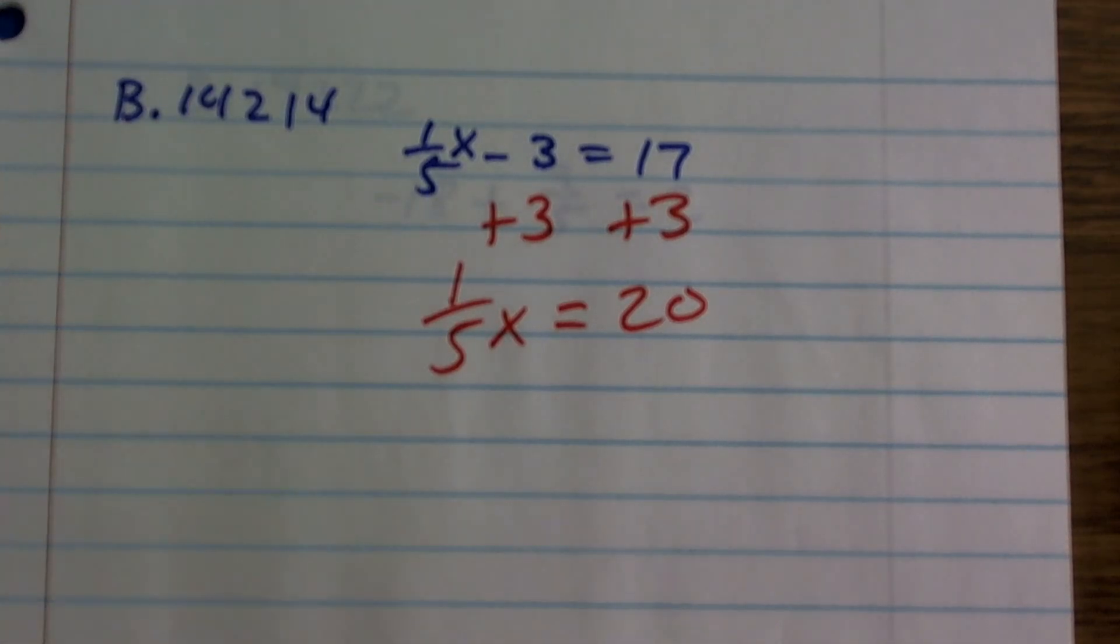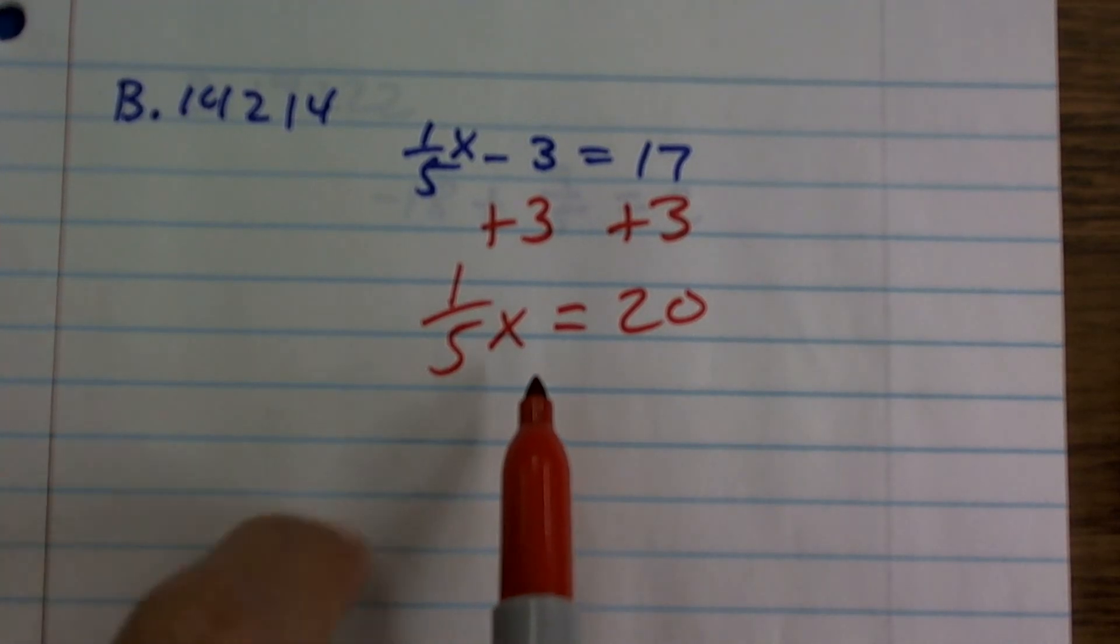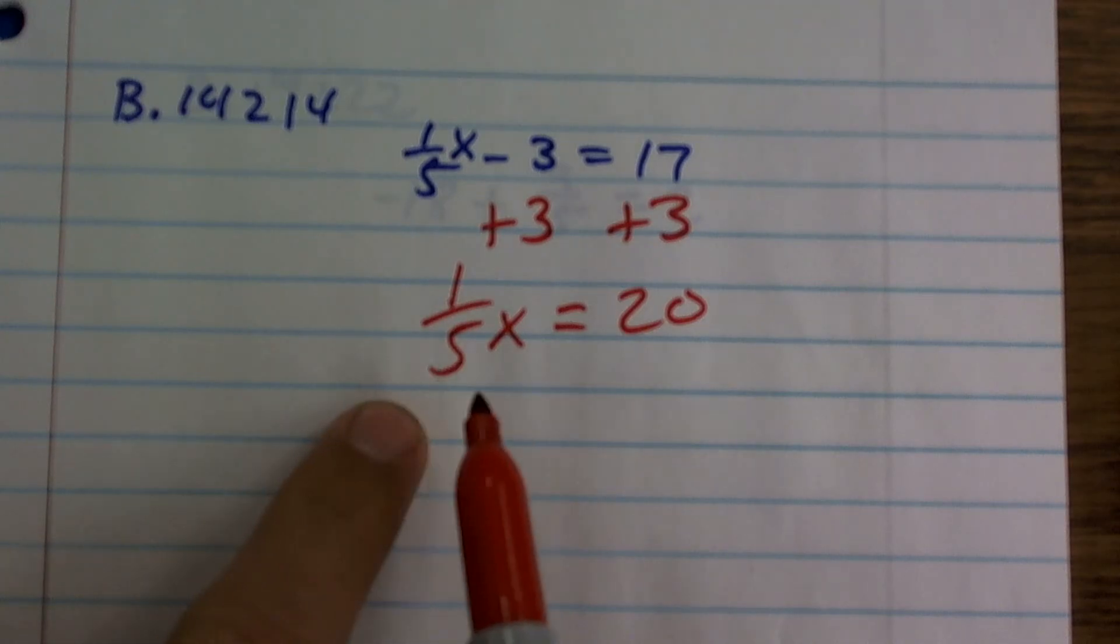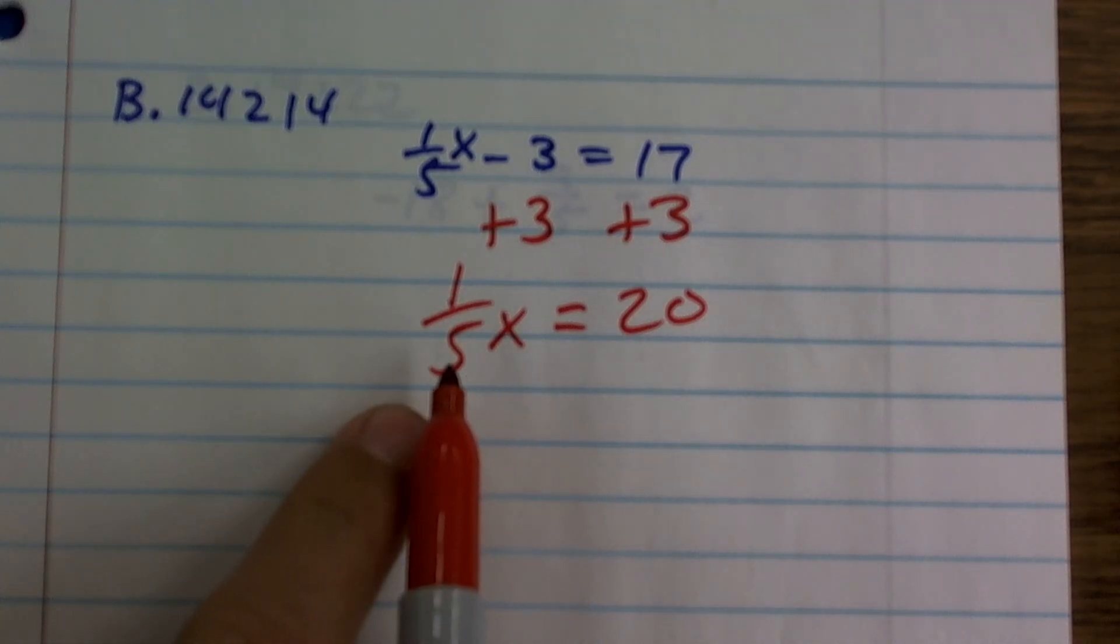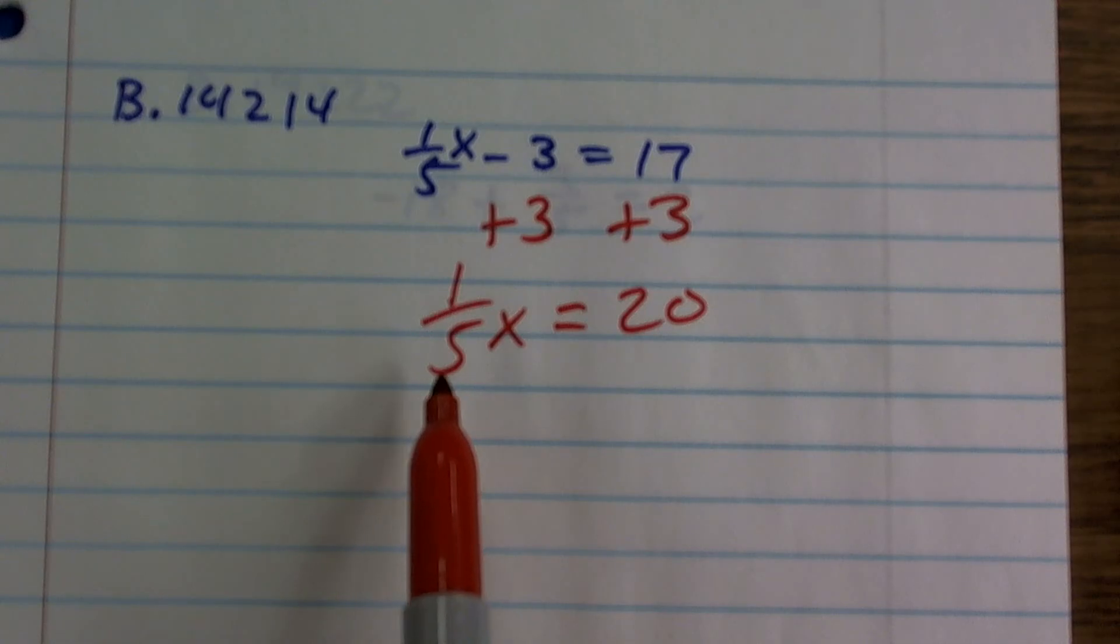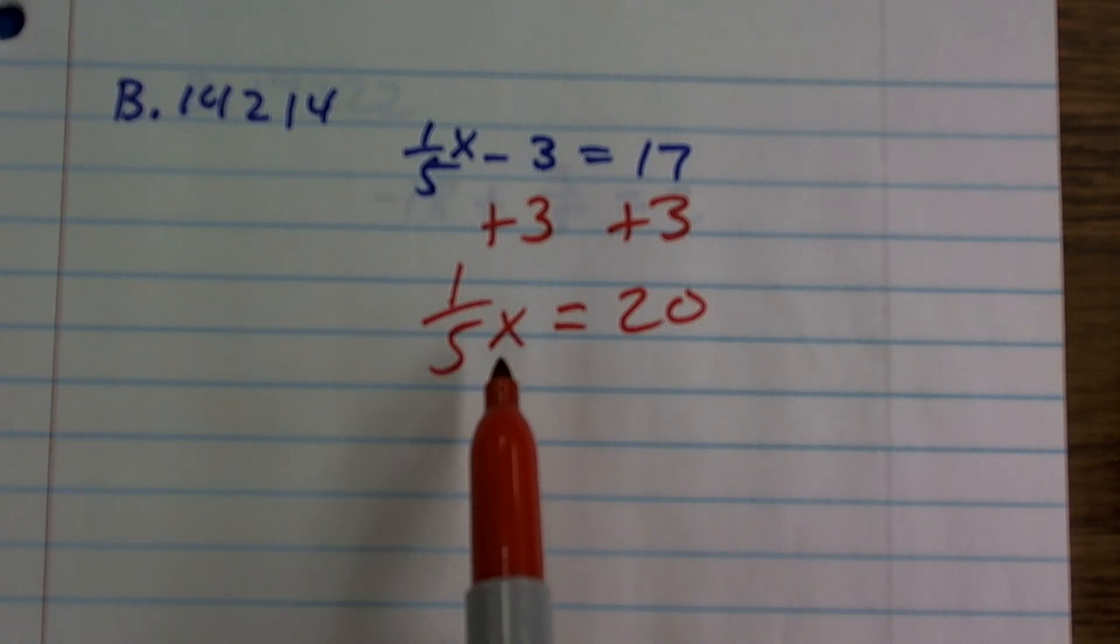The other way to explain it is the reciprocal property. Whenever you have a number being multiplied by a fraction, we want to get this number - instead of one-fifth, we need to get that to be 1, because 1 times x is x. And that means my variable will now be isolated.